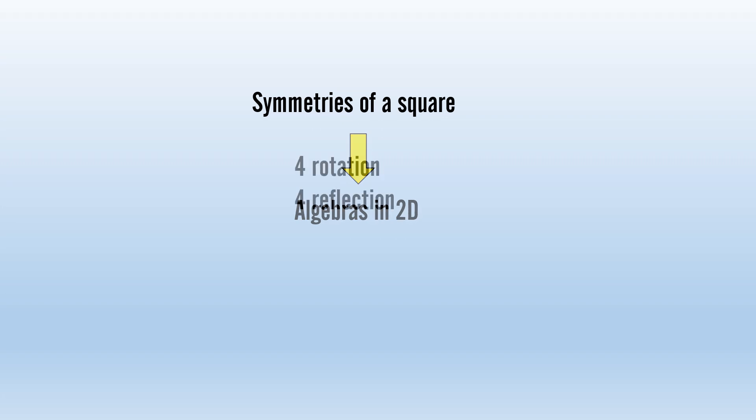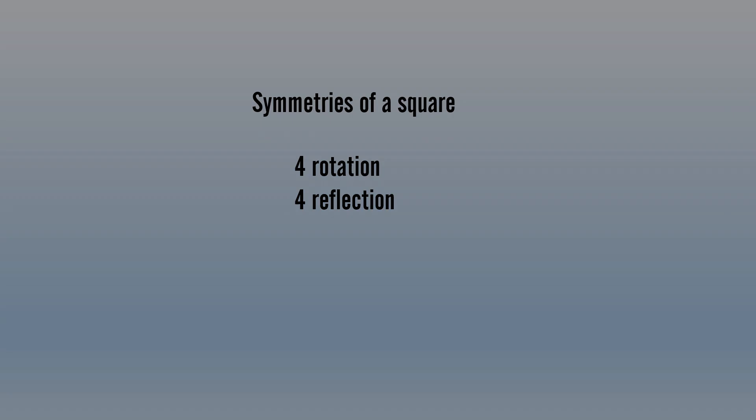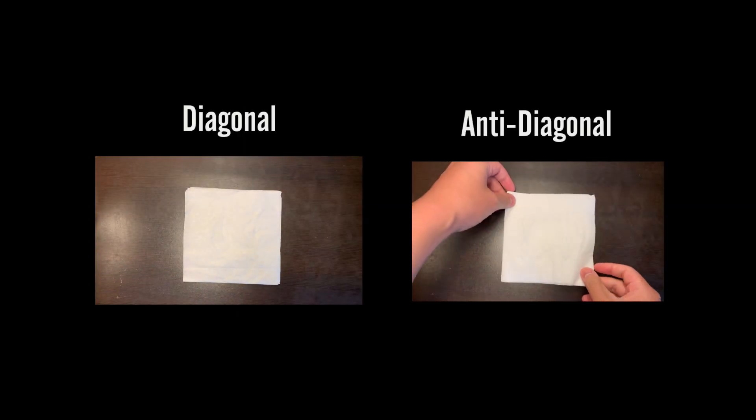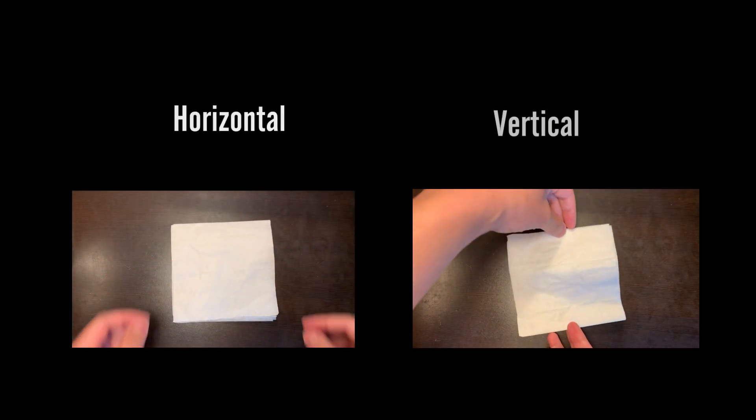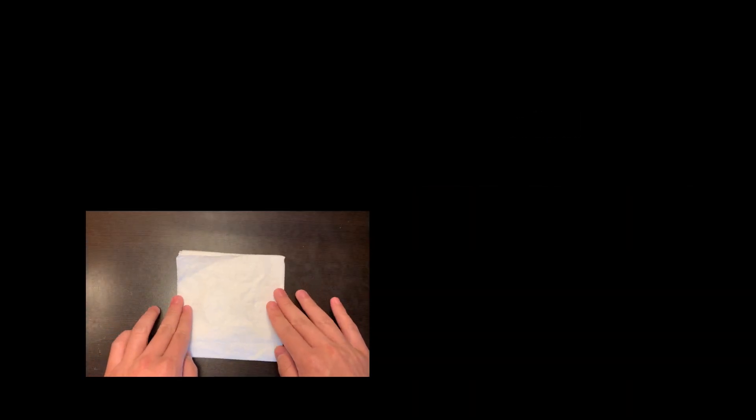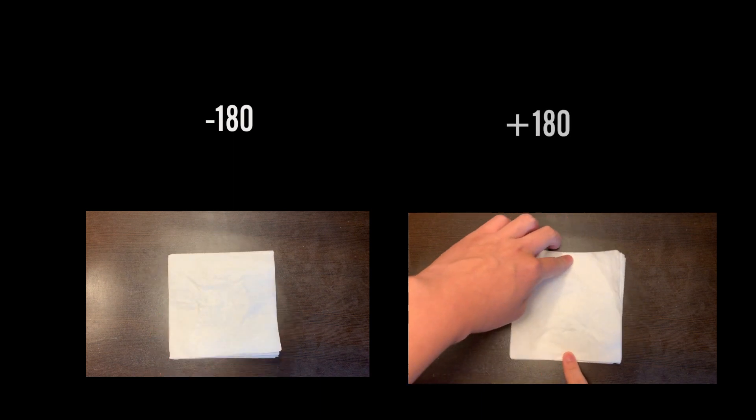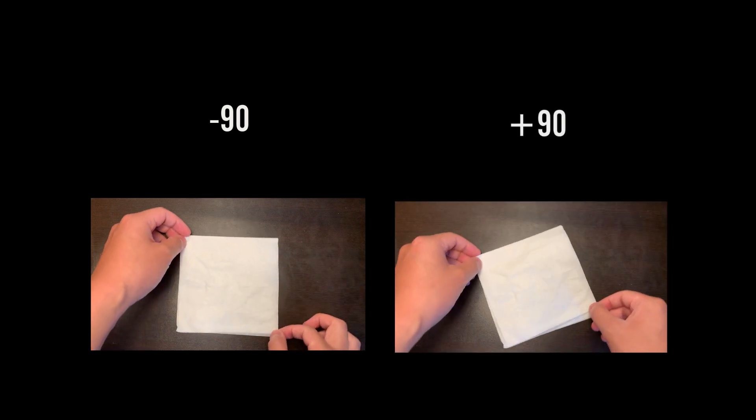Specifically for a square, there are four rotational symmetries and four reflection symmetries. For the reflection symmetries, you can reflect across the diagonals or the horizontal and vertical axis. For the rotational symmetries, you can rotate 180 degrees clockwise or counterclockwise, and you could also rotate 90 degrees counterclockwise and clockwise.